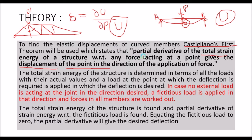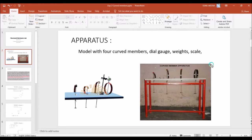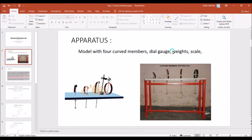In this experiment we have four types of curved members: the first is a quadrant of a circle, the second is a semi-circle with straight leg, the third is a quadrant with straight leg, and the fourth is a full circle. The required apparatus includes a model with the four curved members, two dial gauges — one for vertical displacement and one for horizontal displacement — weights, a scale, and a vernier caliper for determining the cross-section of the member.